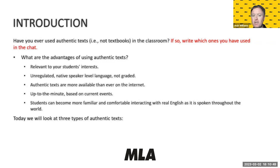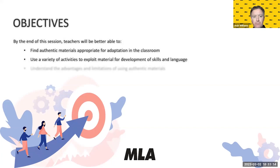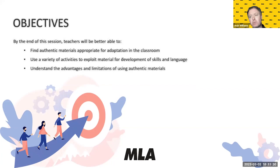We're going to focus today on three types of authentic text principally: news websites, YouTube — we could do a whole webinar just on YouTube — and podcasts. Our objectives are to be better able to find authentic materials appropriate for the classroom, to use a variety of activities to exploit material for development of skills and language, not just in the ways you might expect, but some new ways. We'll also understand the advantages and the limitations of using authentic material — you need to be careful about what you're exposing students to.